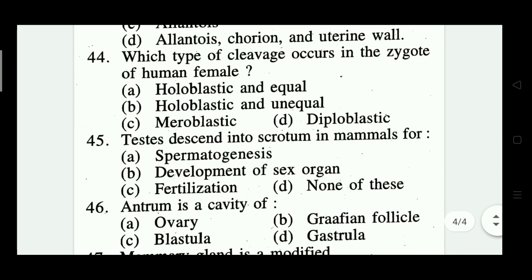Question number forty-four: which type of cleavage occurs in the zygote of human female? Options: holoblastic and equal, holoblastic and unequal, meroblastic, diploblastic. Option A — holoblastic and unequal is the correct answer.